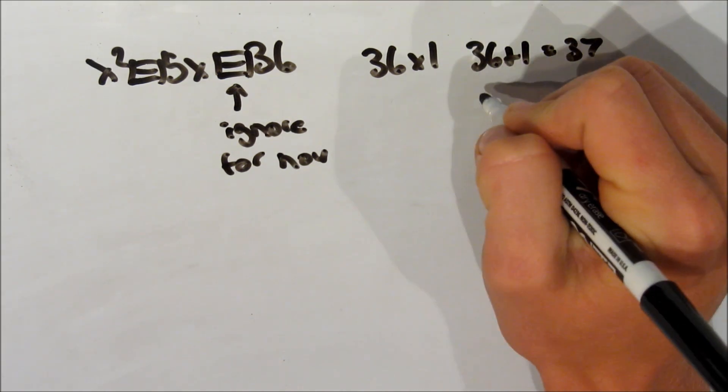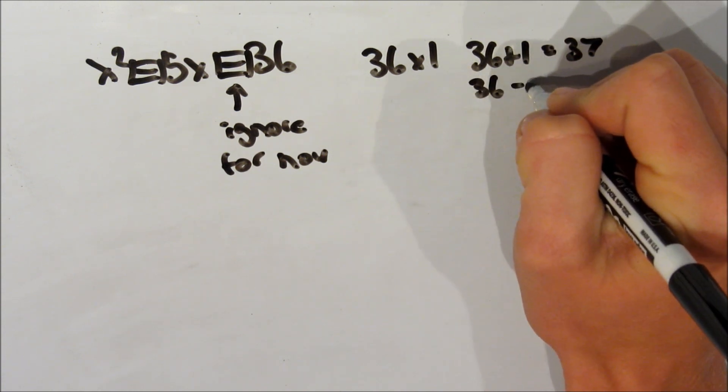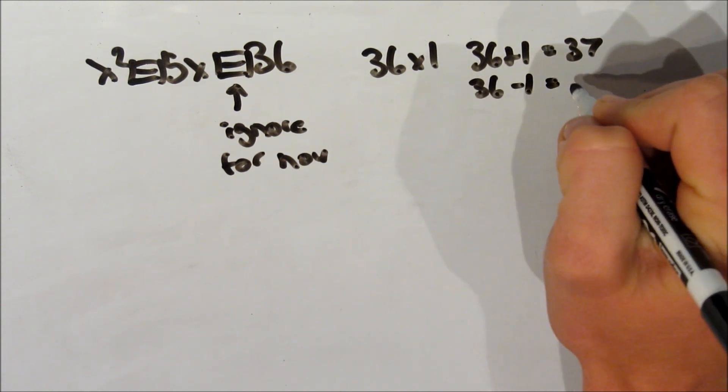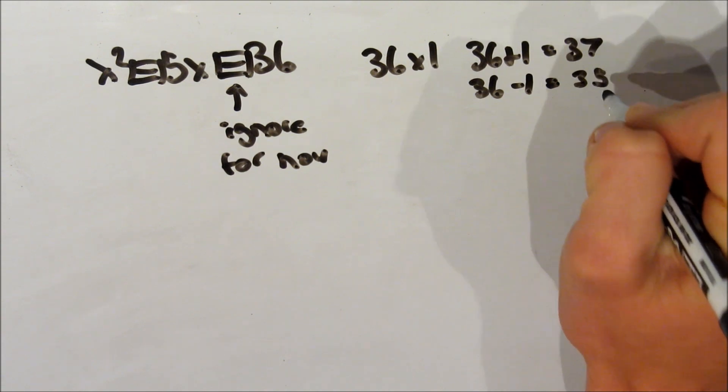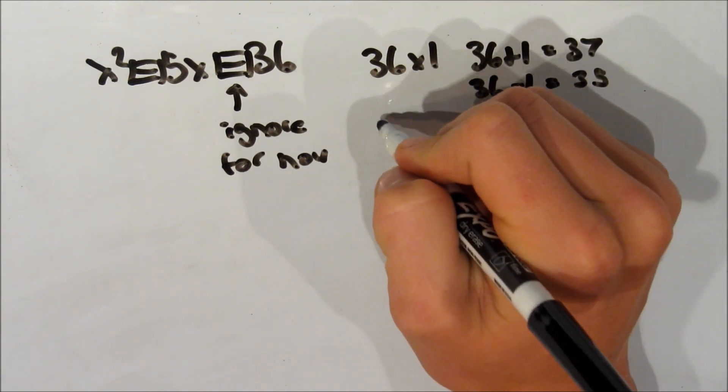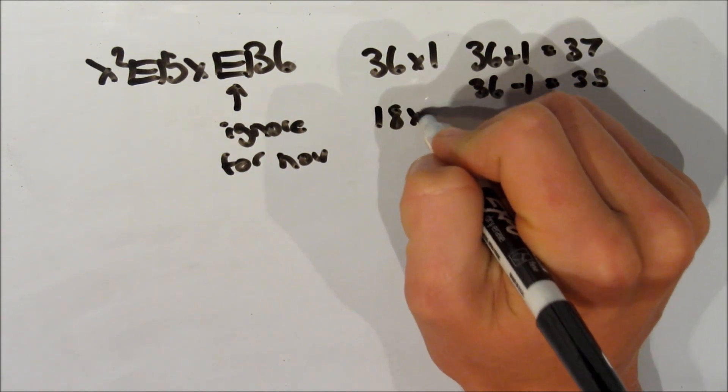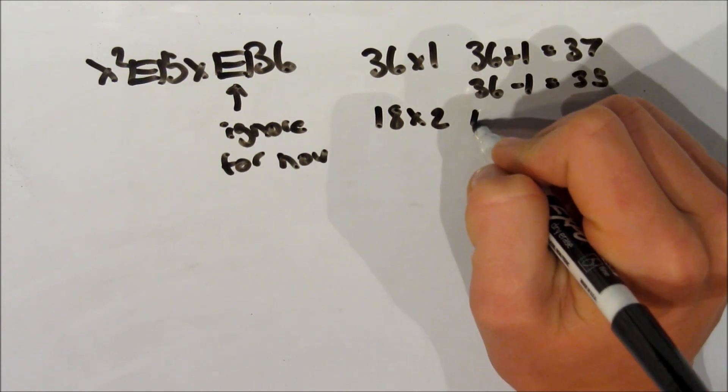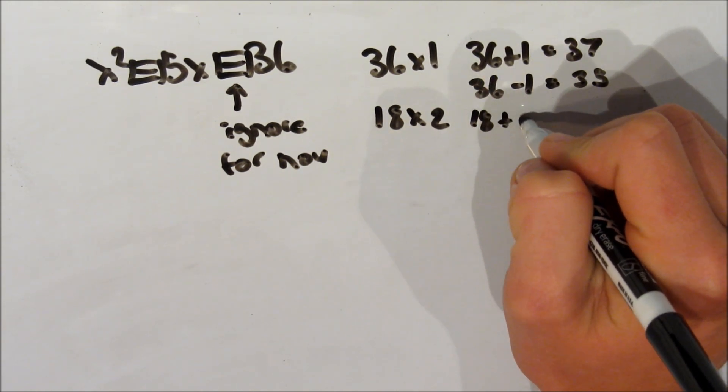36 times 1. We know that 36 plus 1 is 37. And now that we have negative signs, we need to look at the negative as well. 36 minus 1, so we take the difference. That gives you 35. Neither of those give you 5, so we move on to the next factor.